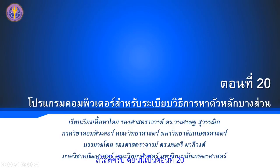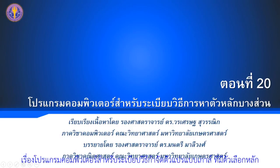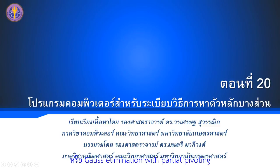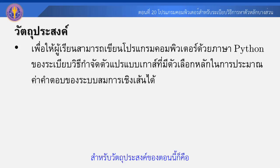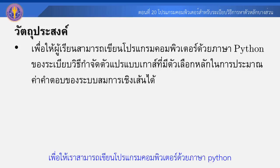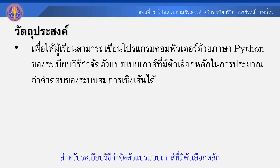สวัสดีครับ ตอนนี้เป็นตอนที่ 20 เรื่องการเขียนโปรแกรมคอมพิวเตอร์สำหรับระเบียบวิธีกำจัดตัวแปรแบบ Gauss ที่มีตัวเลือกหลัก หรือ Gauss Elimination with Partial Pivoting สำหรับวัตถุประสงค์ของตอนนี้ก็คือเพื่อให้เราสามารถเขียนโปรแกรมคอมพิวเตอร์ด้วยภาษา Python สำหรับระเบียบวิธีกำจัดตัวแปรแบบ Gauss ที่มีตัวเลือกหลัก เพื่อประมาณค่าคำตอบของระบบสมการเชิงเส้น